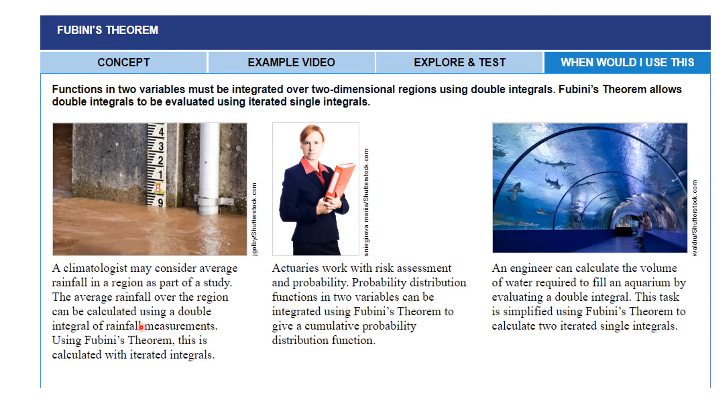Now, why would you use these double integrals? Well, a climatologist might consider average rainfall in a region as part of a study. What I'm going to do is I'm going to show you later that the average rainfall, in fact, the average of a function is going to be defined in terms of a double integral. So the average rainfall over region may be calculated using a double integral of rainfall measurements. So then we use iterated integrals to calculate this. Actuaries work with risk assessment and probability. Probability distribution functions in two variables can be integrated using Fubini's theorem to give a cumulative probability distribution function. And an engineer can calculate the volume of water required to fill an aquarium by evaluating a double integral. This task is simplified using Fubini's theorem to calculate two iterated single integrals.